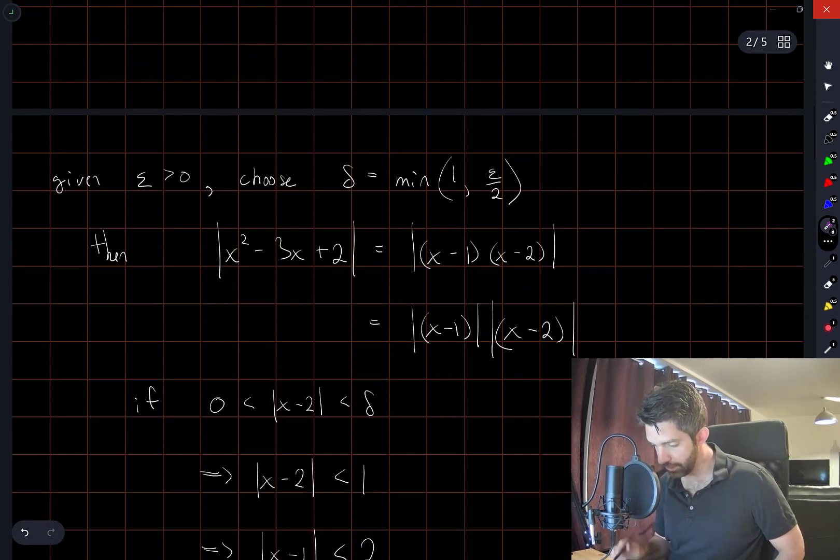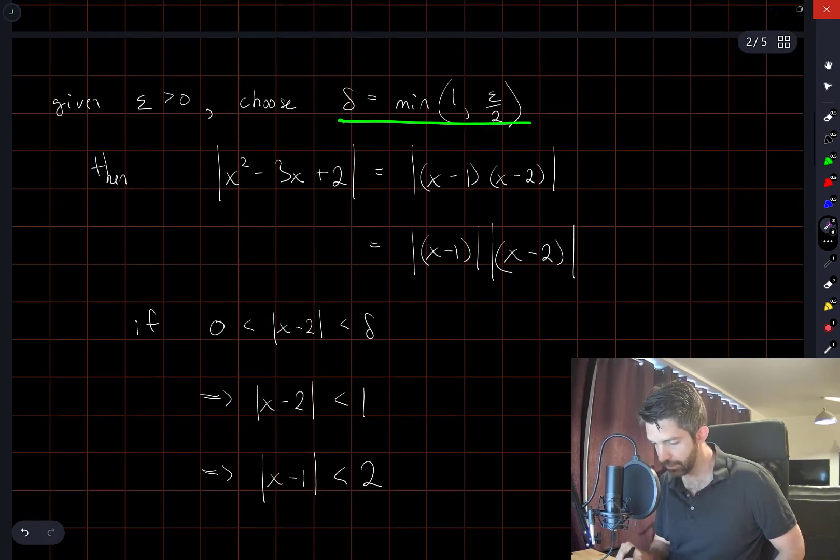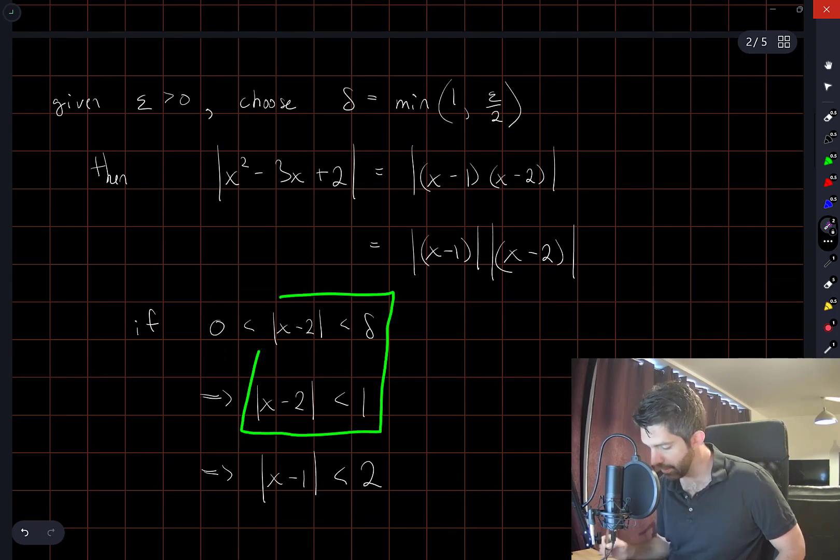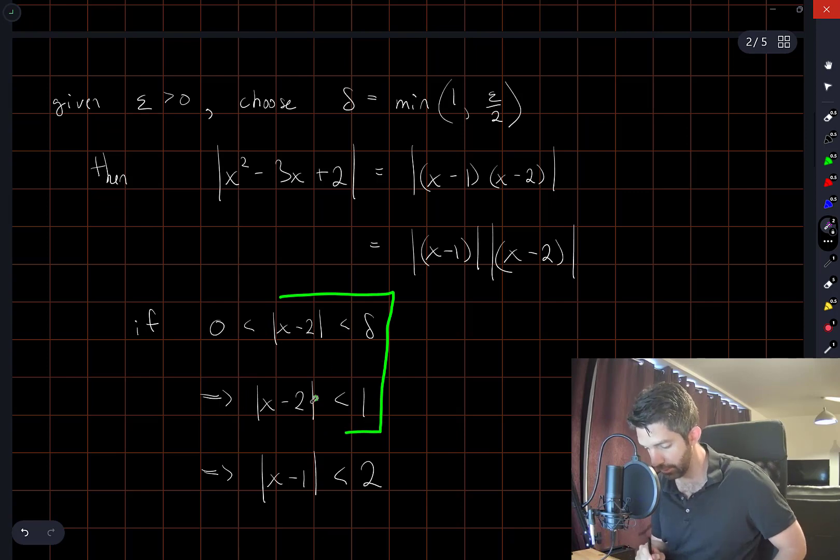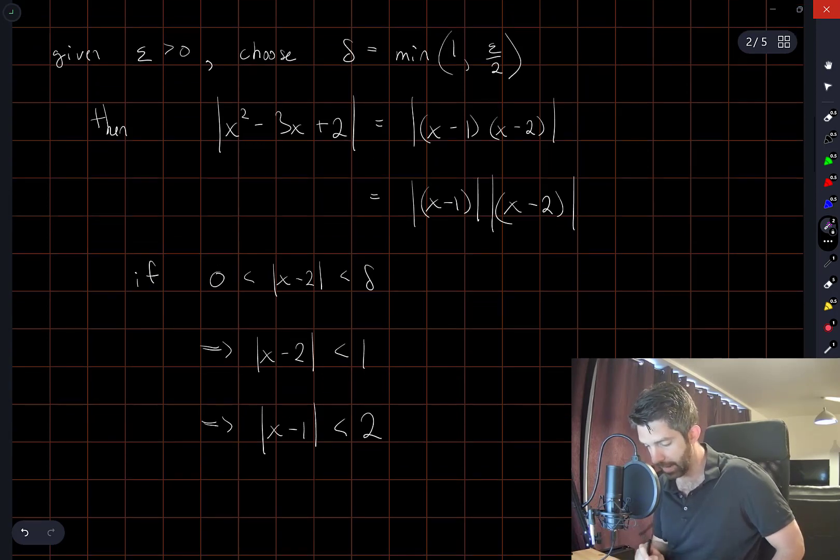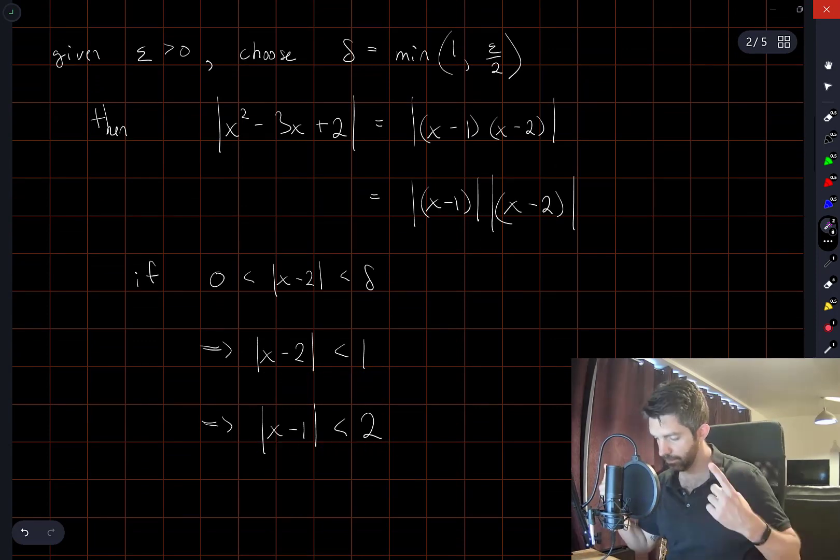But the way that I've chosen delta, because I've chosen delta to be the minimum of these two numbers, that implies this thing here, right? If x minus 2 is less than delta, then certainly x minus 2 has to be less than 1. But x minus 2 less than 1 implies x minus 1 is less than 2 from the number line.